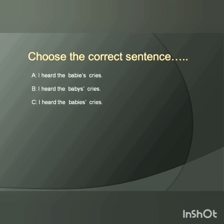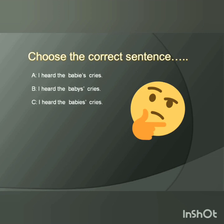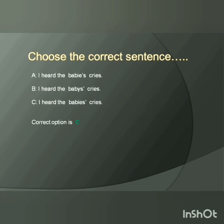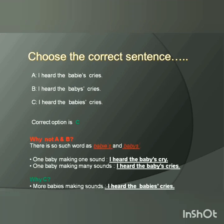Take your time and think for some time. Since it is a noun teaser, the mistake is about noun. I hope you are ready with the answer. You must have noticed that the issue is with the plural form of baby. Option C is the correct answer. So why not A and B? Because there is no such word as written in option A and option B.